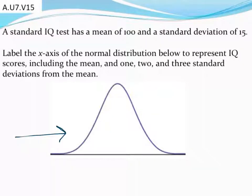Let's take our normal distribution curve down here and label it with the mean and some standard deviations we're given. In order to do this, we're going to take our mean. This time we're looking at a standard IQ test with a mean of 100.